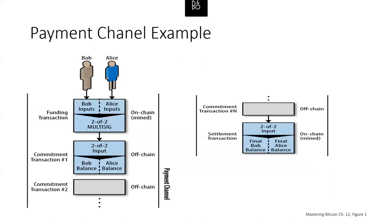Here's an example of a payment channel with Bob and Ellis. We've got a funding transaction which is mined on-chain, a series of commitment transactions that are off-chain, and then a final settlement transaction which is again on-chain. The beginning transaction and the final transaction are on the chain — everything else is just a commitment transaction. What you're seeing is a 2-of-2 multi-sig where they're constantly changing the balance, and then they finally sign it at the end.